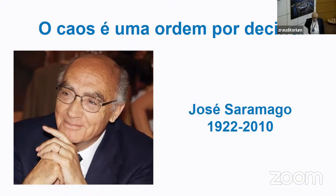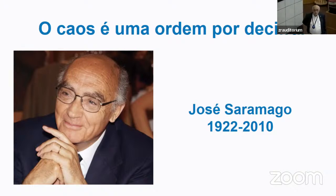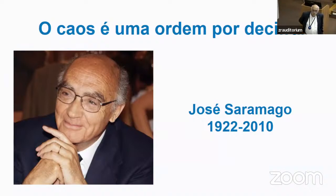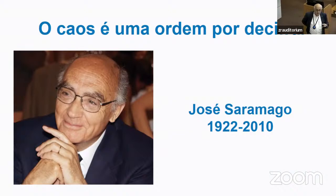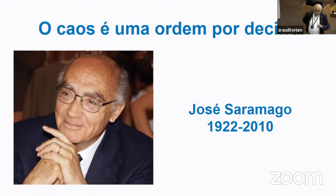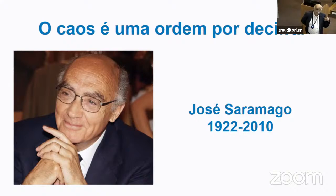A question on what allows computational savings in this hybrid approach: the basic thing we could not do without is the construction of the neural network potential, because ab initio MD would be prohibitive per se and would also scale very badly with system size, becoming very prohibitive. The enhanced sampling is useful, but you could do other sampling methods. Without the NN potential, it would not have been possible.